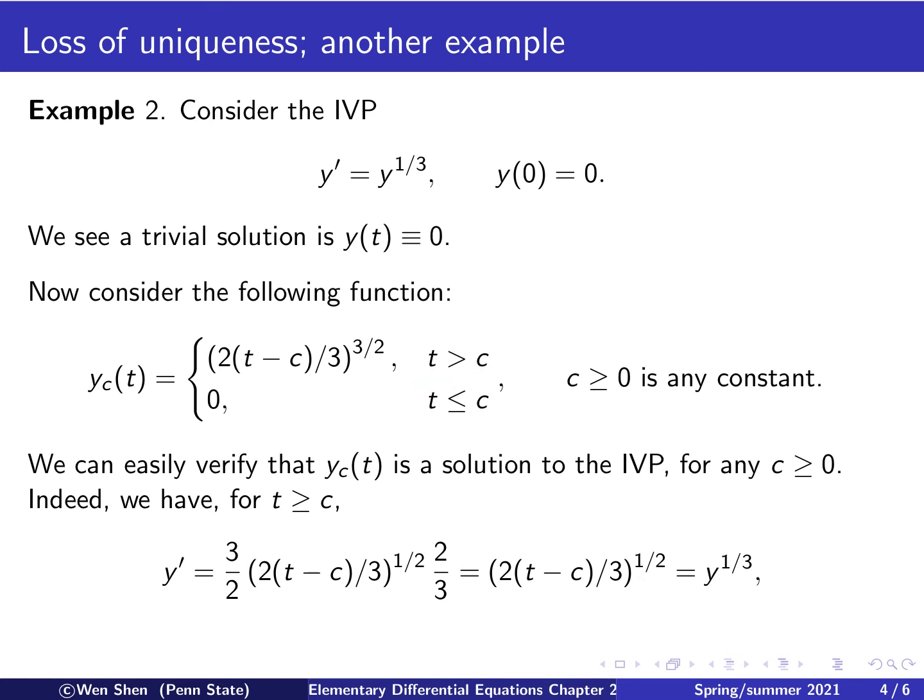Let's consider t bigger than c, and y takes this form. Let's compute y prime. Differentiating this one, we can use the chain rule. What we have is this number here, 3 over 2, times what's in here to the power of this minus 1, which is half. Differentiating t gives me a constant 2 over 3, and 2 over 3 cancels that, and we just get this guy here.